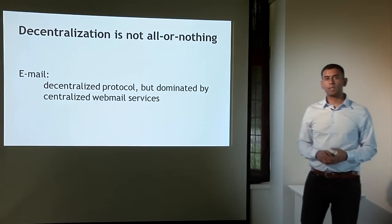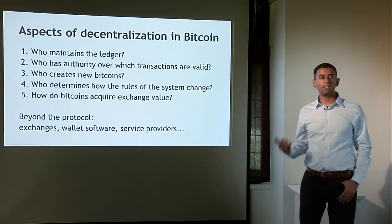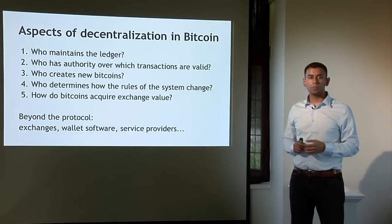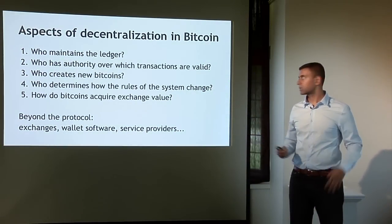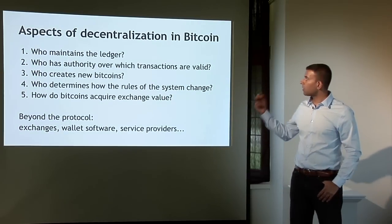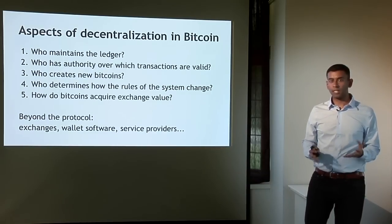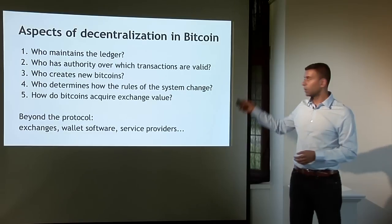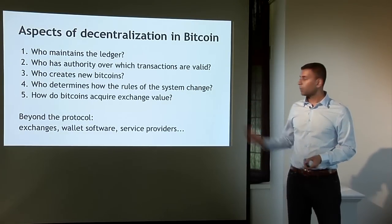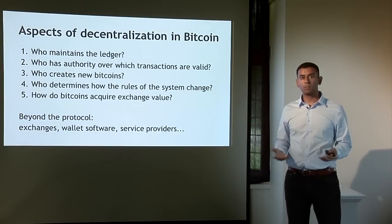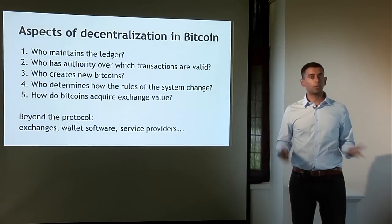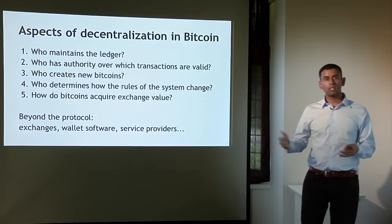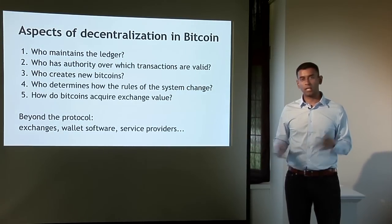Let's delve into some of the technical aspects of Bitcoin's decentralization. I would break this down into at least five different questions: who maintains this ledger of transactions? Who has authority over which transactions are valid? Who creates new Bitcoins? Who determines how the rules of the system change? And how do Bitcoins acquire exchange value? These are all components of decentralization of the Bitcoin protocol, and the first three are the questions we will consider in this lecture. There are also aspects to decentralization beyond the protocol, including Bitcoin exchanges, wallet software, and a variety of other service providers — even though the underlying protocol is decentralized, these services may be centralized or decentralized to varying degrees.